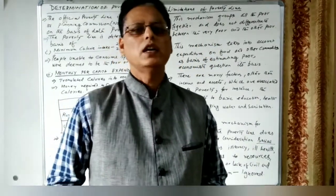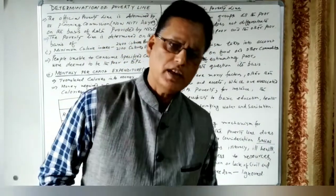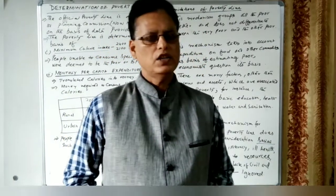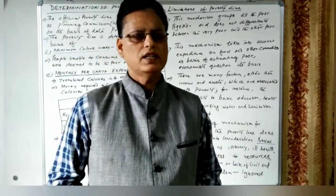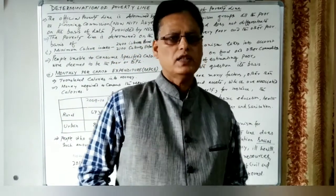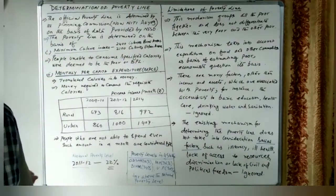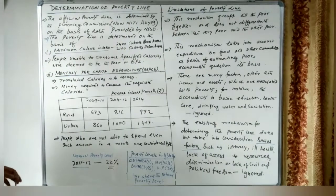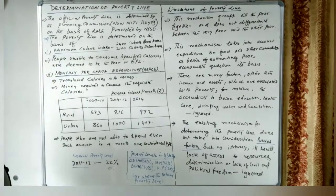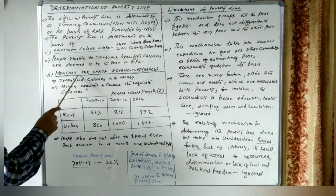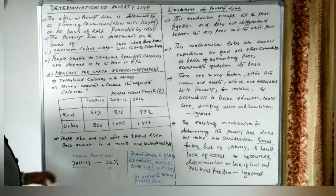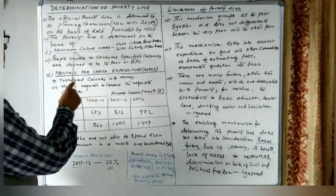There are various ways to measure the poverty line in our country, but we use only two methods. The first method used by NITI Aayog or the Planning Commission is the minimum calorie intake method, and the second is known as the Monthly Per Capita Expenditure, or MPCE, method.